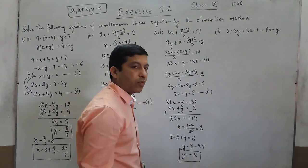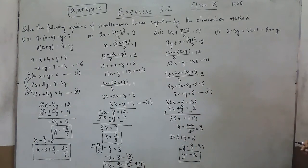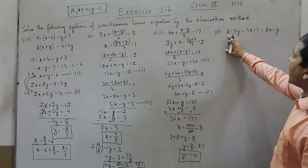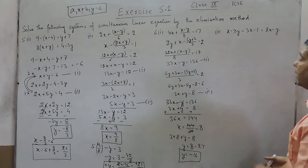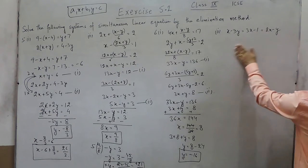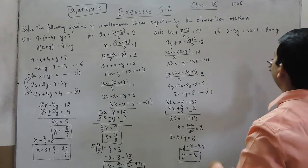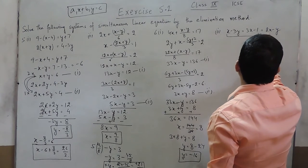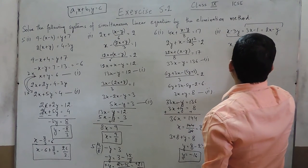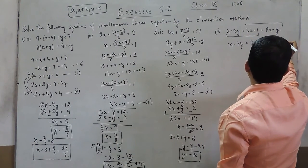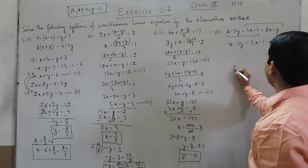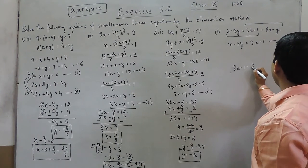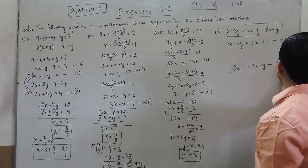If we look at the second part of question number 6: x minus 3y is equal to 3x minus 1 is equals to 2x minus y. It looks like a simple equation but it is not — these are two different equations. The first can be x minus 3y is equals to 3x minus 1, and the second can be 3x minus 1 is equals to 2x minus y.